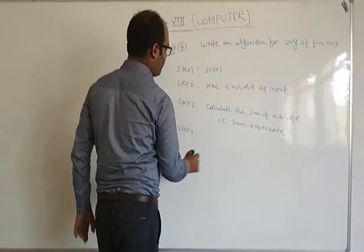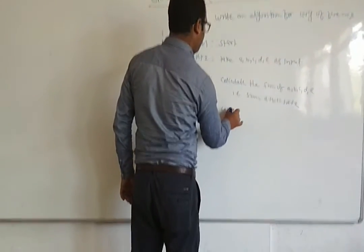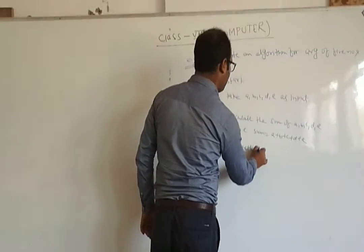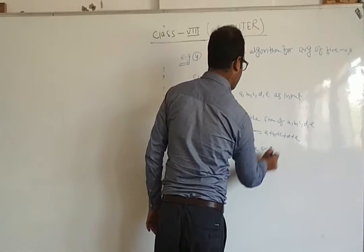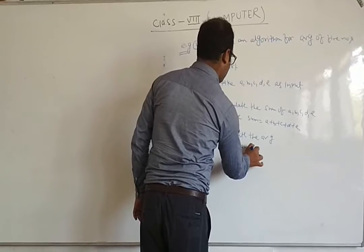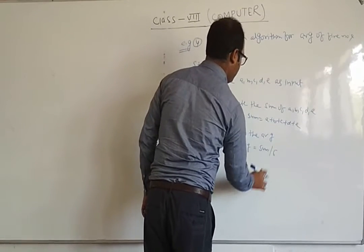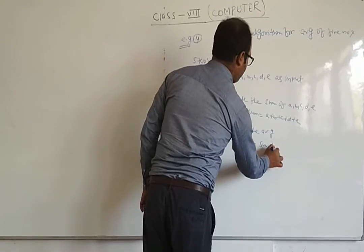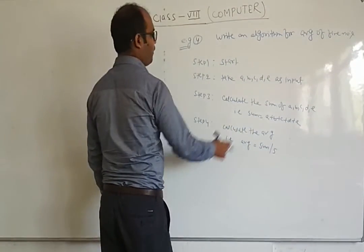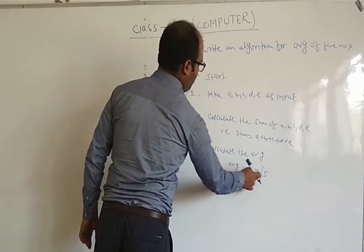calculate the average, that is, average is equal to sum divided by 5, sum divided by 5. Because A, B, C, D, E, for total count, 5, so sum divided by 5.